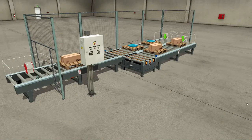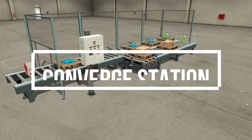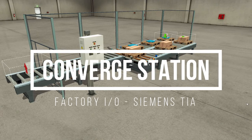This is Converge Station at Factory I.O. Two conveyors with different items join together in one exit conveyor.